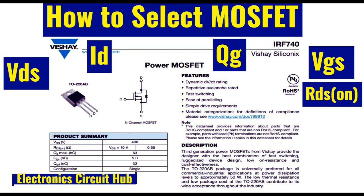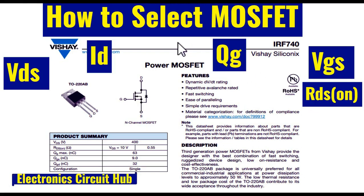We will understand the different MOSFET parameters like MOSFET drain-to-source voltage VDS, MOSFET drain current, MOSFET gate charge, MOSFET gate-to-source voltage, what is the role of MOSFET gate-to-source voltage, and what is RDS_on in the MOSFET. I will also tell you the thumb rule of selecting the MOSFET for your application.